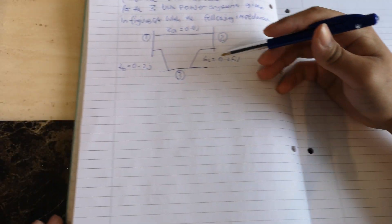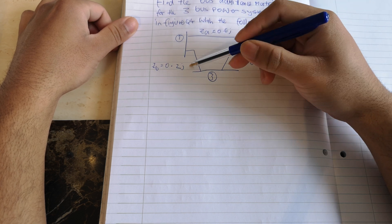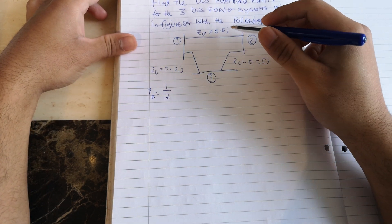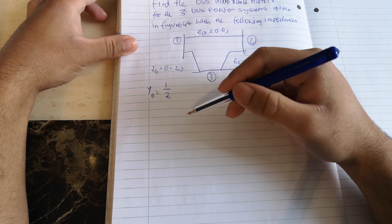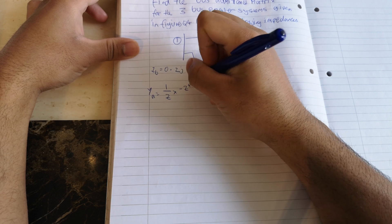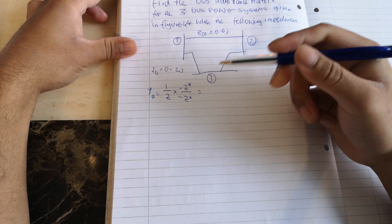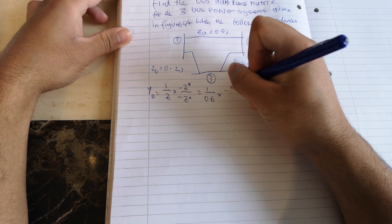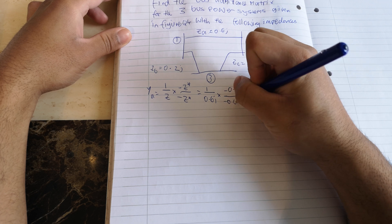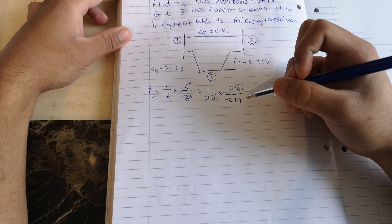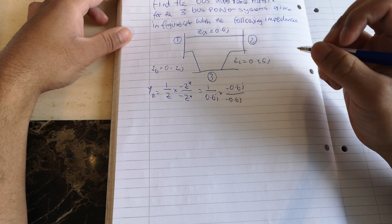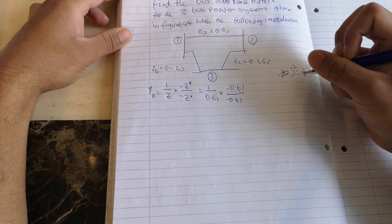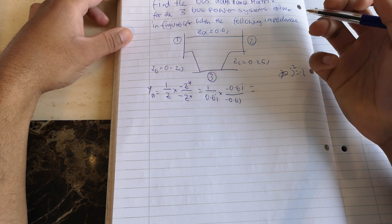The first thing we want to do is find Ya, Yb, and Yc. To find Ya we use the formula one over Z, but there's a j involved, so this is a complex number. Therefore we can't just do one over Z — we have to multiply by the conjugate, which is the minus of Z over the minus of Z. We also need to remember that j-squared equals minus one.